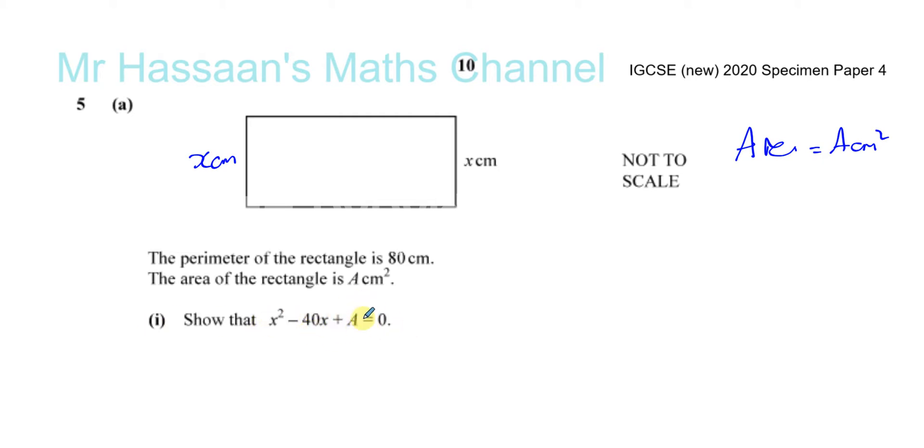Show that x squared minus 40x plus a equals 0. That's not so bad because we don't have to find what a is. So now, there's something missing here. And that is the length of the rectangle. They didn't tell us how the length and the width are related. So what I'm going to do is, nothing else we can do, let's just call it y. So if that's y, then that's also y.